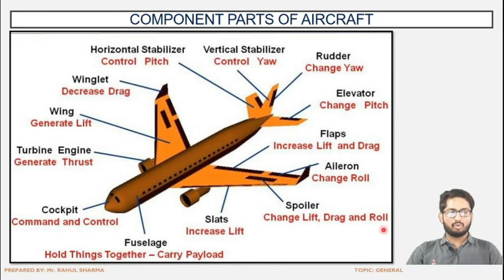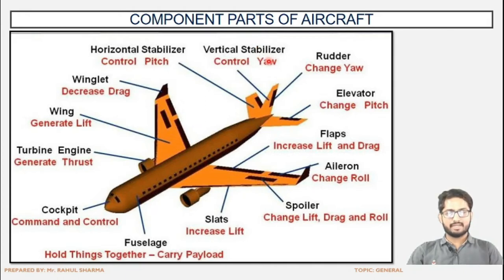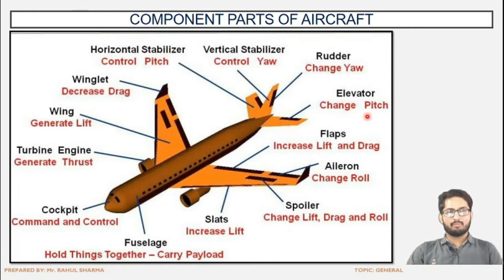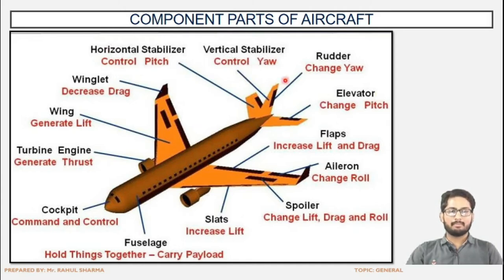Next are yaw, pitch, and roll. Roll is the front-back movement along the longitudinal axis. Yaw is the movement in the vertical plane while pitch is the sideways movement. The elevator and the horizontal stabilizer are related to pitch — that is the sideways movement of the aircraft. The elevator changes the pitch and the horizontal stabilizer controls the alignment. The rudder changes the yaw — the vertical alignment. The vertical stabilizer controls movement in the vertical plane.